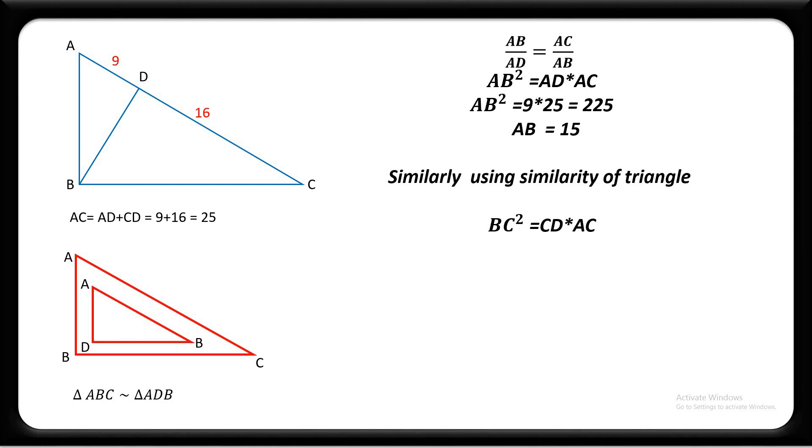And we know both values CD and AC. Now BC squared equals 16 multiplied by 25, equals 400. Take the square root of both sides and we get BC equal to 20.